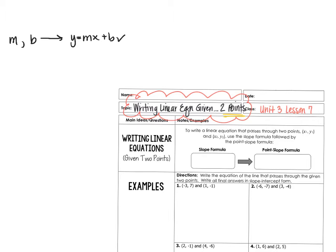You've been able to write linear equations given a slope and a point, where you put it into point-slope form, and then once it was in point-slope form, you translated it into y equals mx plus b.